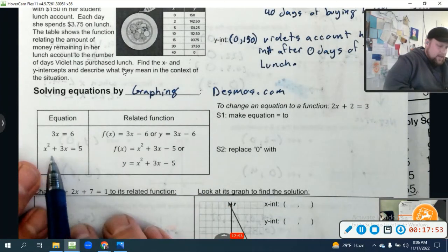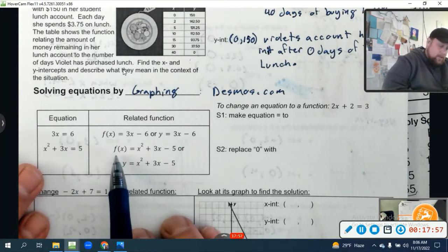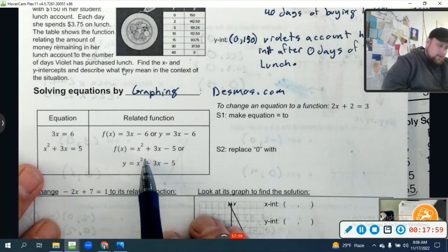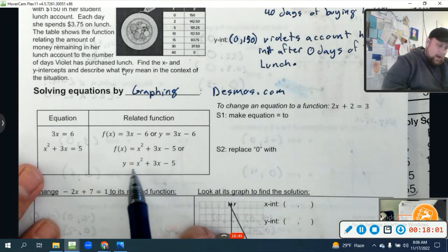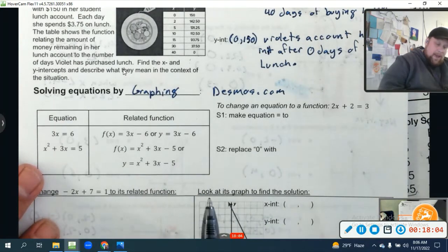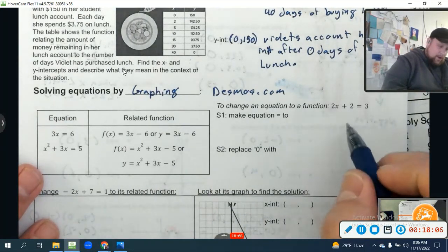Just like an equation x² + 3x = 5, the associated function is f(x) = x² + 3x - 5 or y = x² + 3x - 5. How do we change an equation to a function?